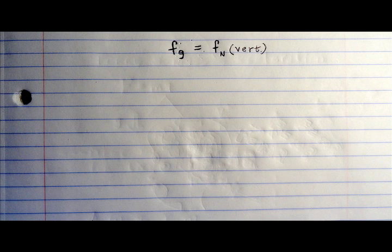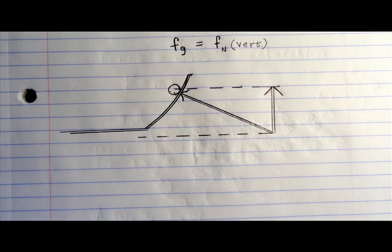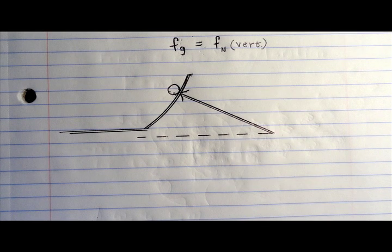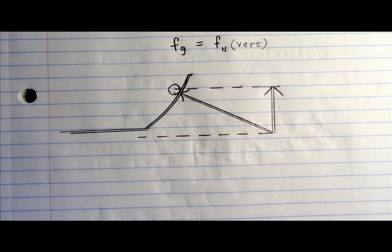We start with this equation that says the force due to gravity is equal to the vertical component of the normal force. Let's draw this out so we can see what we're talking about.